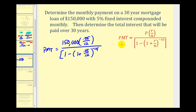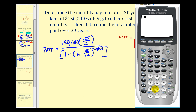N is 12 and T is 30, so our exponent is negative 360. Let's evaluate this — we'll put our numerator in a set of parentheses and divide by our denominator. We can see that our monthly payment is approximately $805.23.